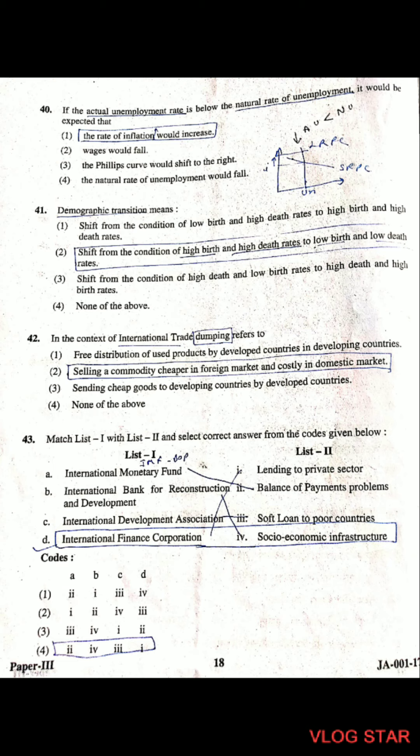Question 41: Demographic transition may shift from conditions of high birth rates and high death rates to low birth rates and low death rates. Initially there are high birth and death rates, but as societies move to higher stages with better medical facilities, there are low birth and low death rates.